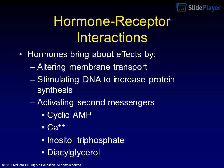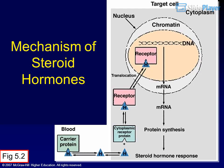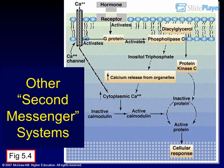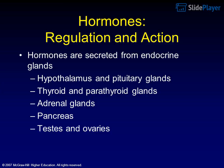Hormones bring about effects by altering membrane transport, stimulating DNA to increase protein synthesis, or activating second messengers such as cyclic AMP, Ca²⁺, inositol triphosphate, and diacylglycerol. These mechanisms include the steroid hormone mechanism, the cyclic AMP second messenger mechanism, and other second messenger systems.